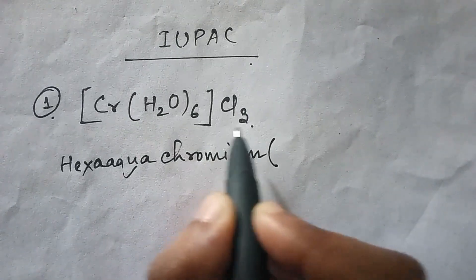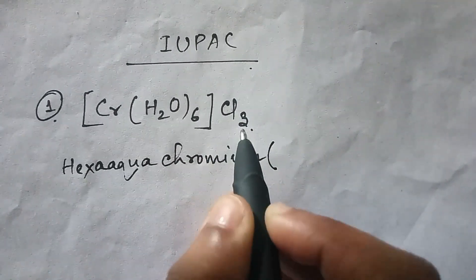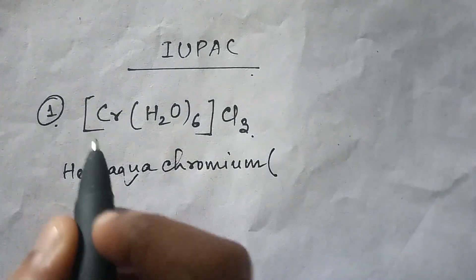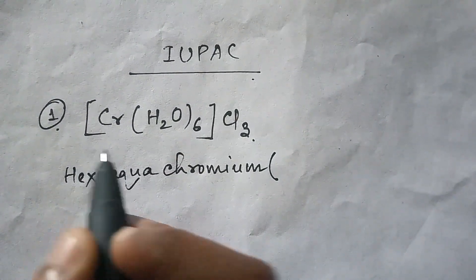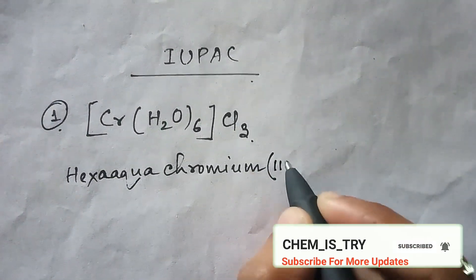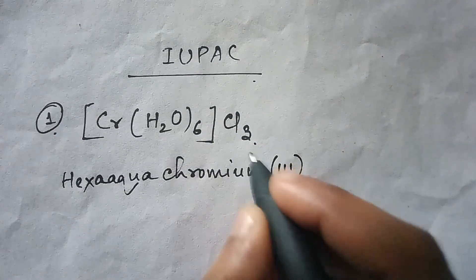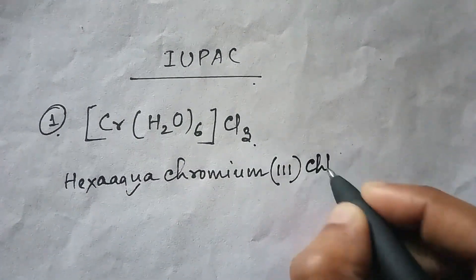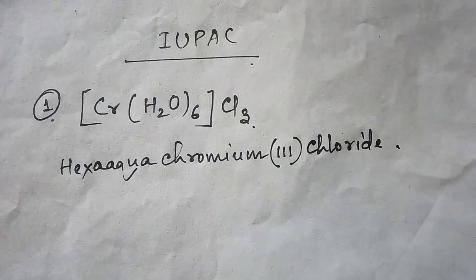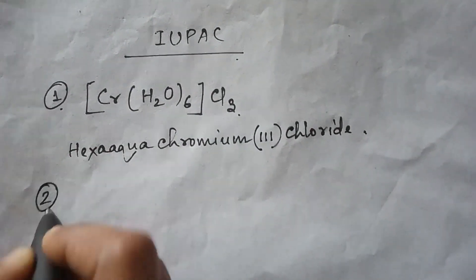Now write the oxidation state of the metal. Chlorine is an anionic species giving 3 minus, so the chromium oxidation state is 3 plus. The overall compound is neutral, so we write Roman numeral III. Then write the counter ion part, which is chloride.